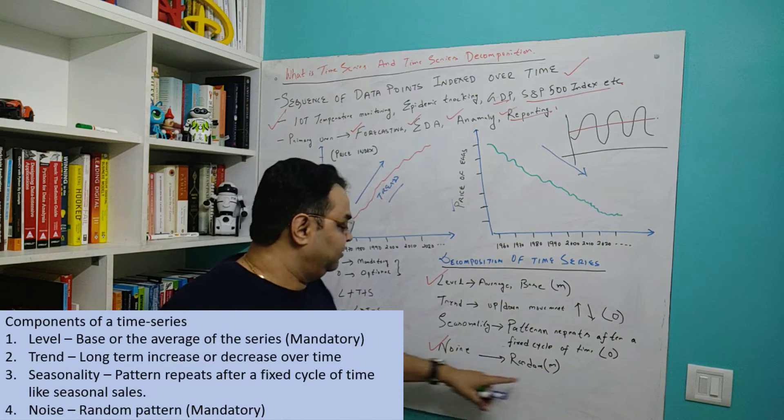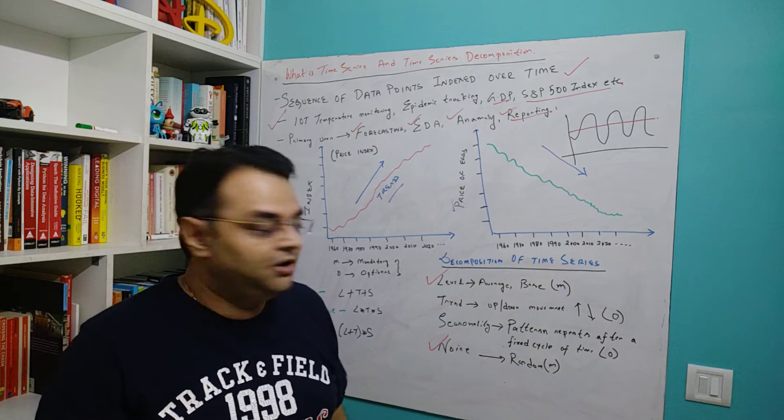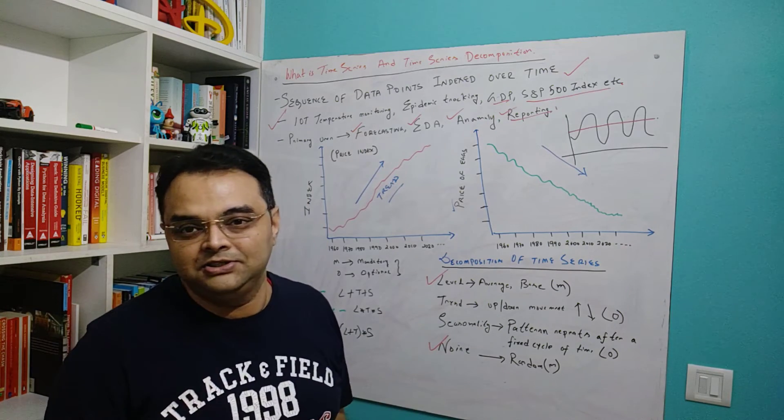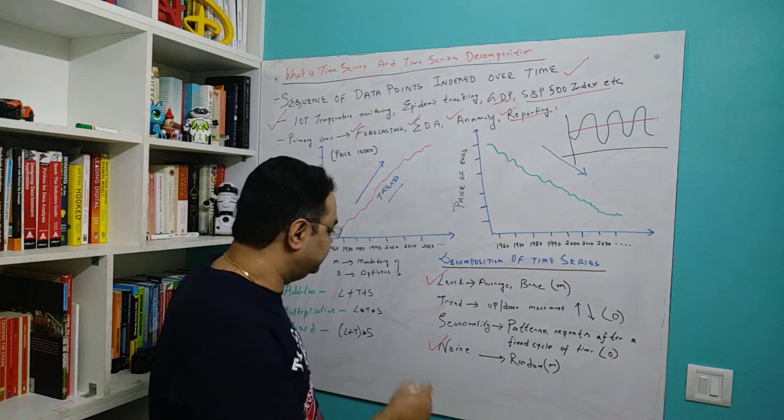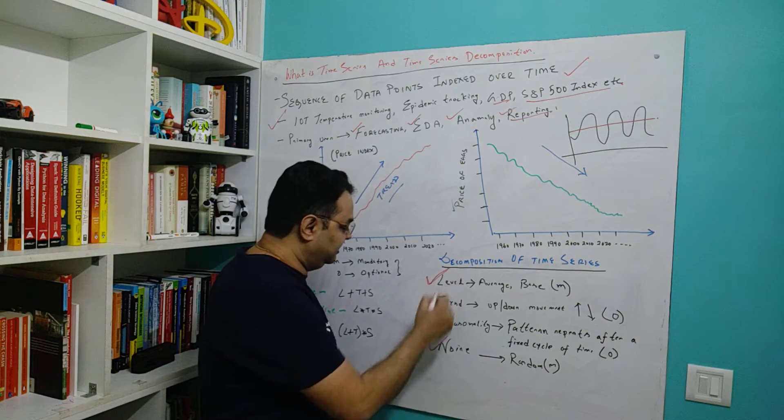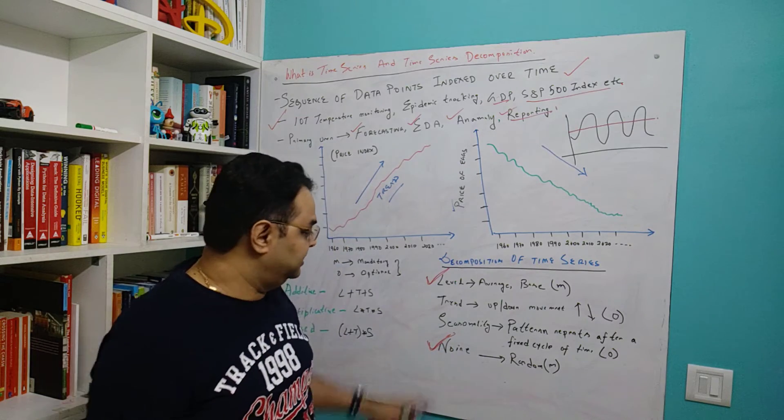Noise is the randomness which we can't predict, and we just have to leave it. It is not so useful for us, but it is mandatorily present in all time series. So these are the two components, level and noise, which are mandatory.